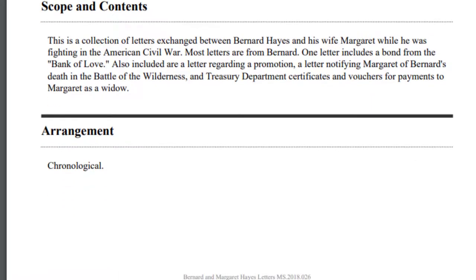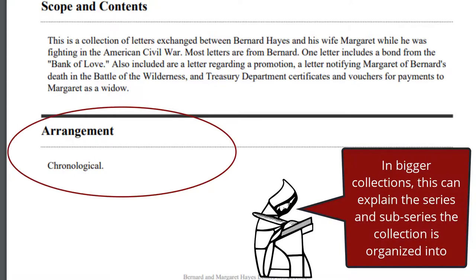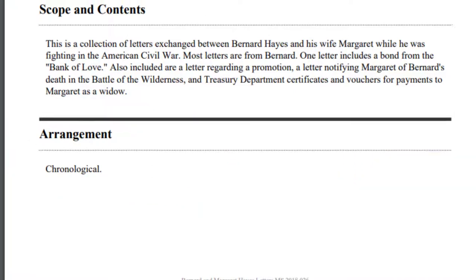The Scope and Contents is a summary of what types of things and formats you can expect in this collection. It will not tell you everything that is included, but can give you a sense of what the majority of the collection focuses on. The Arrangement Note describes how things are organized and where in the collection inventory you should start looking.